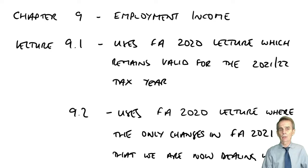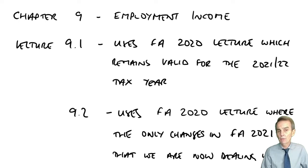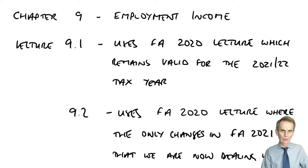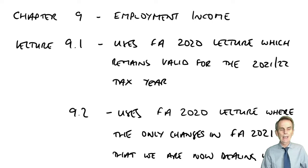Primarily for our exams, the 21-22 tax year. Chapter 4 and Chapter 5 established how to compute the tax-adjusted trading profit, whether it's a sole trader or a partnership. Chapter 6 showed us how to deal with individuals in terms of working the assessments in both opening years, continuing years of an unincorporated trade, and then the closing years — the cessation of trading.